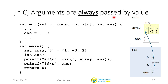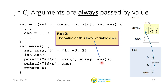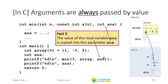It's very important that we understand what this technical term means very precisely. Here in main is where we call the min function, and this variable ans corresponds to the third parameter of the min function. At this point in the code, the value sitting inside this local variable ans is copied into this parameter. The parameter gets a copy of the value — this is what we mean by arguments being passed by value. You don't get the original variable itself, you get a copy.